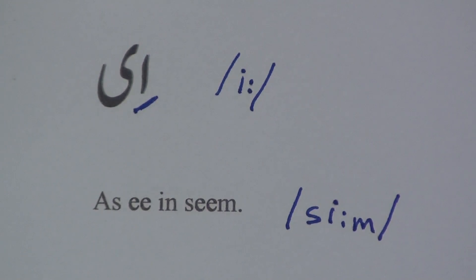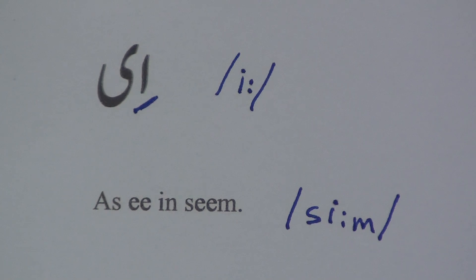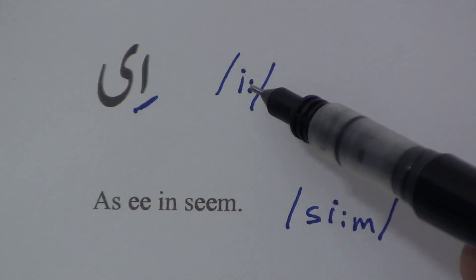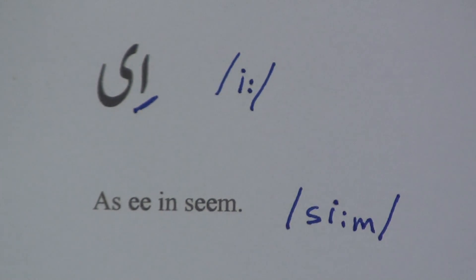Our next vowel sound is 'ee.' It is a combination of alif, zel, and chhoti yee. Alif, zel, and chhoti yee together give the sound 'ee.' Alif zel alone was 'e,' and alif zel with chhoti yee is 'ee' — like the double 'ee' in the English word 'seem.' This is the phonetic symbol of 'ee.'